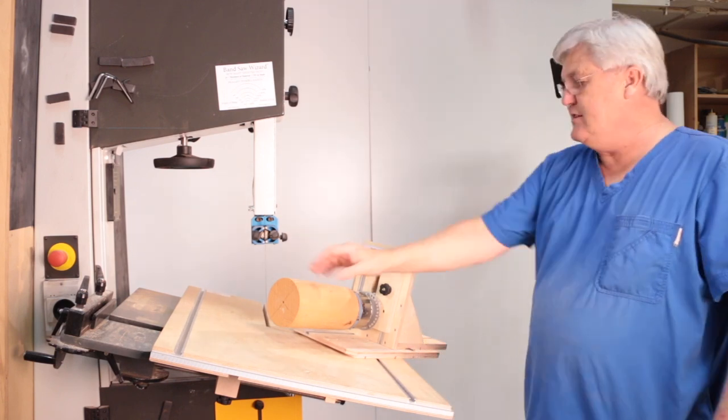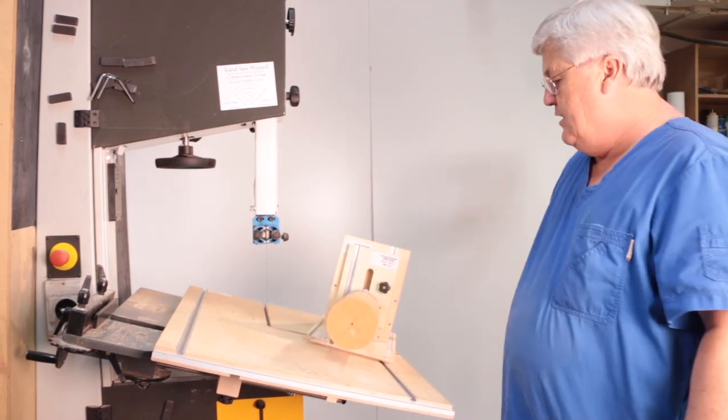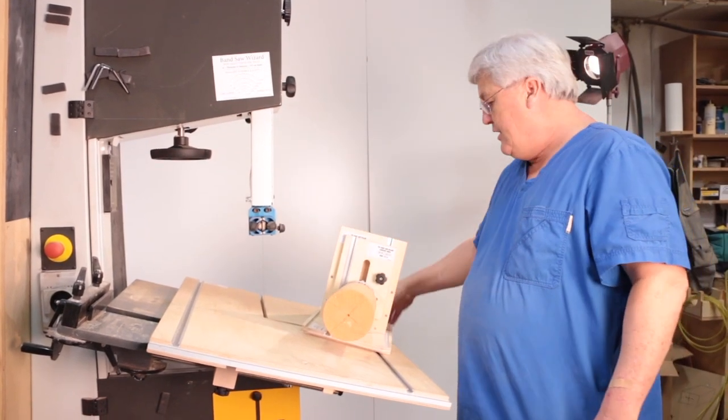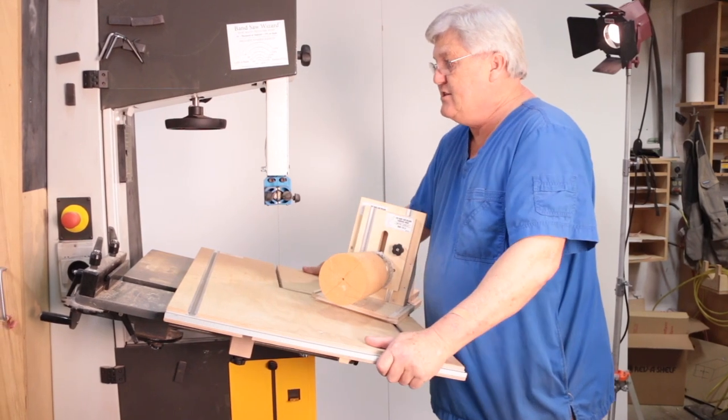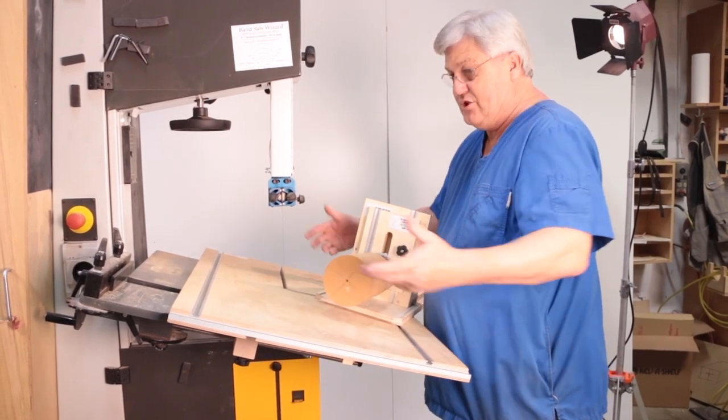Basically I took this, I haven't hollowed it out, just for an example of how to do it. The nice thing about this table is it clamps to the existing table and it's actually sturdy.